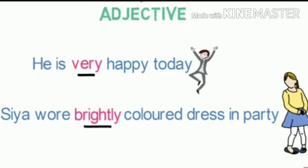Up to this, I have taught you how adverbs qualify a verb. But now I am going to tell you how adverbs can describe adjectives also. For example, 'He is very happy today' — 'happy' is an adjective, but 'very' describes the intensity of happiness. 'Siya wore a brightly colored dress at the party' — 'colored' is an adjective, but 'brightly' describes the intensity of color, so 'brightly' is used as an adverb.